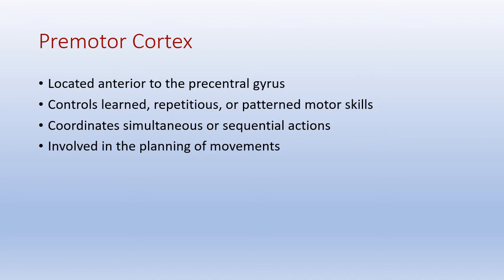The premotor cortex is the area that develops the plan for motor control. In sports, this relates to developing motor memory — your ability to do the same skill over and over again, learning and perfecting it through practice. The premotor cortex gets that plan down by going over the same movements again and again. The premotor cortex fires to the primary motor cortex, which then sends its upper motor neurons down to the spinal cord.